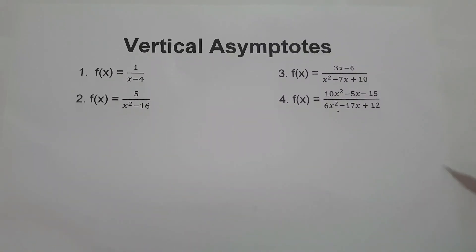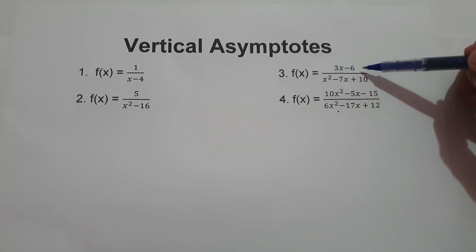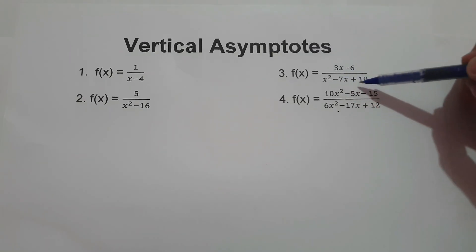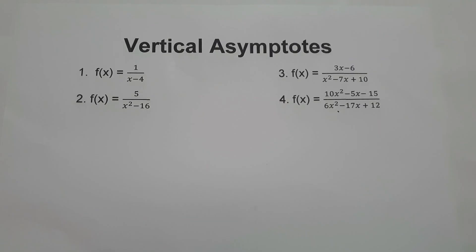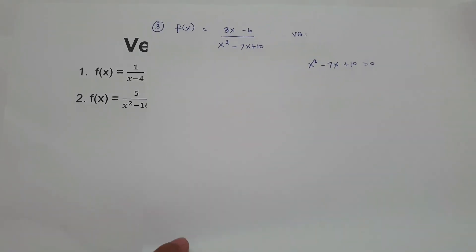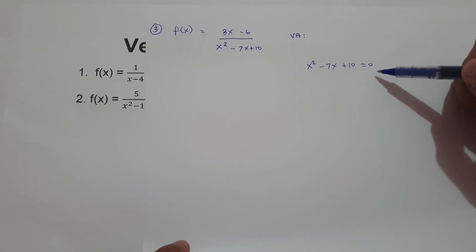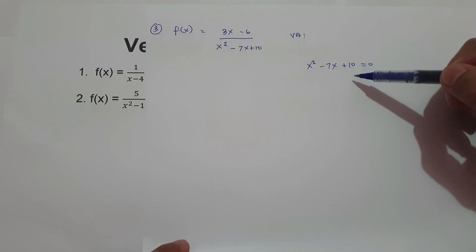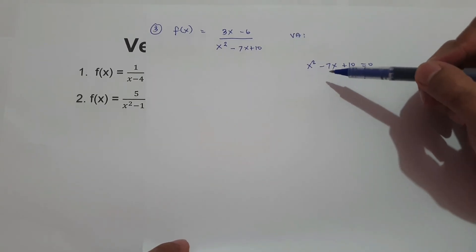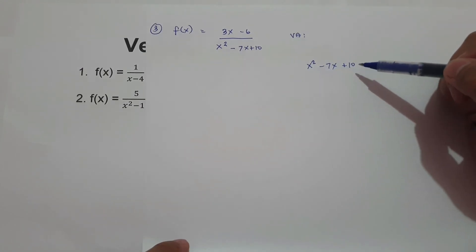On number 3, we have f of x equals 3x minus 6 all over x squared minus 7x plus 10. To find the vertical asymptote, we equate the denominator to zero: x squared minus 7x plus 10 equals zero. This is a trinomial, so to find the value of x, we factor x squared minus 7x plus 10.